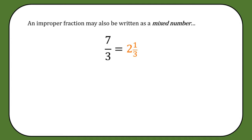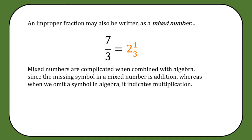The other reason I'm hesitant about mixed numbers is that they're really problematic when we start to combine them with algebra. In a mixed number like 2 and 1 third, there's a symbol missing between the 2 and 1 third. That missing symbol is actually addition — 2 and 1 third means 2 plus 1 third. In algebra, when we omit a symbol, for example 2x, we mean multiplication: 2 times x. So combining the two conventions together is quite problematic.